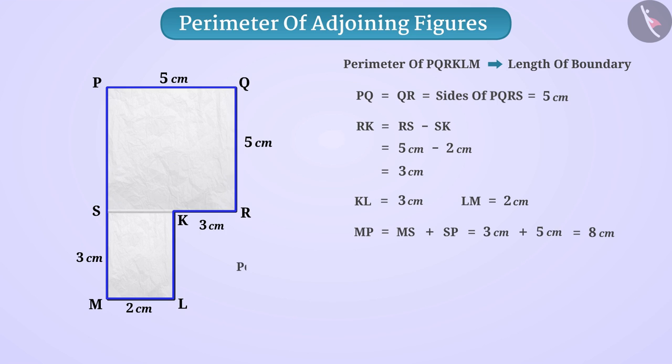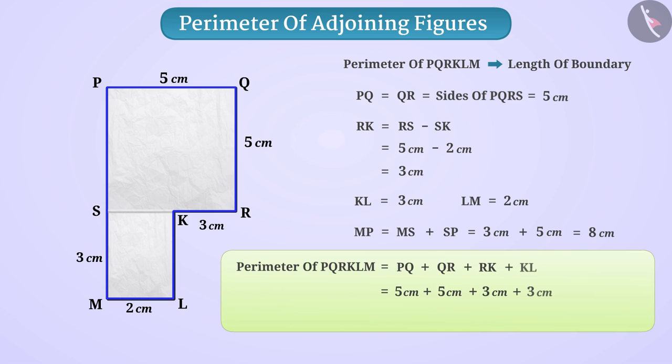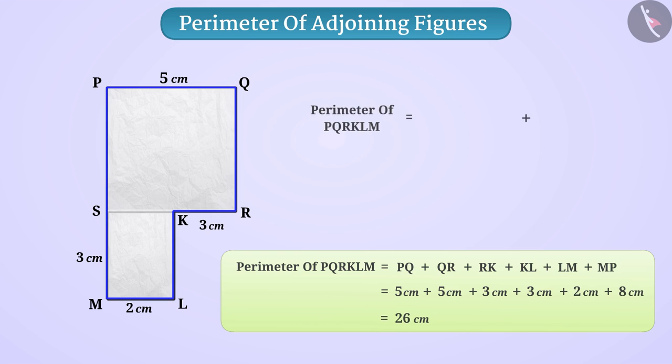In this way, the perimeter of the figure PQRKLM will be PQ plus QR plus RK plus KL plus LM plus MP is equal to 26 cm. Just think, can we add the perimeter of a square and the perimeter of a rectangle? No.